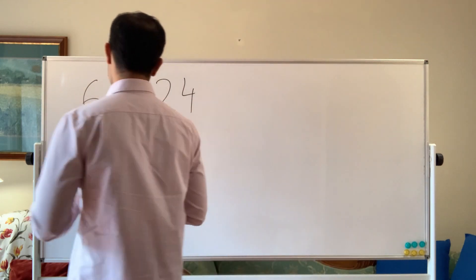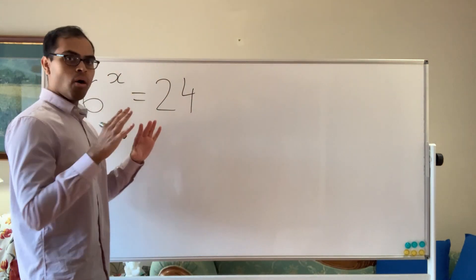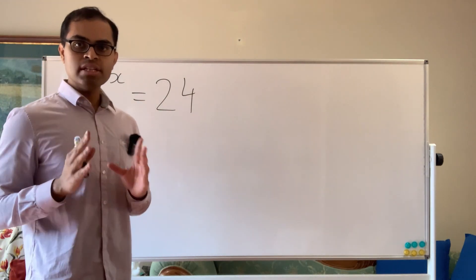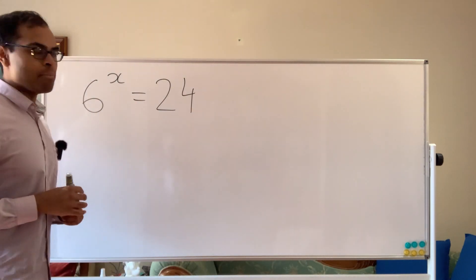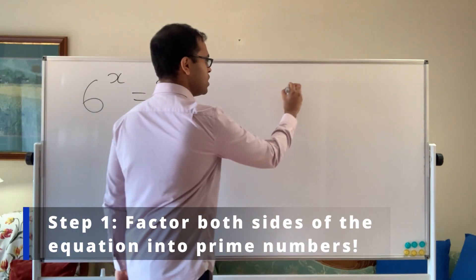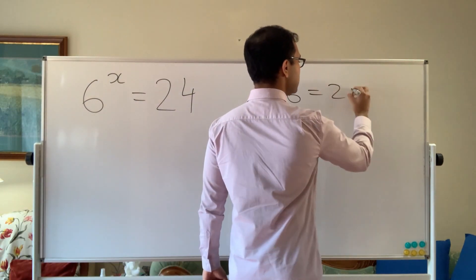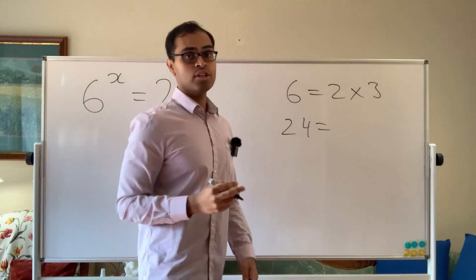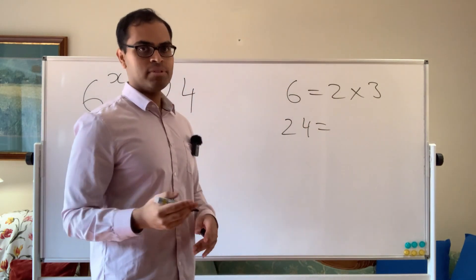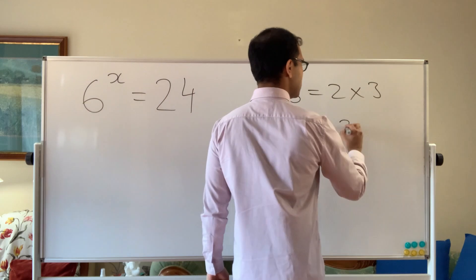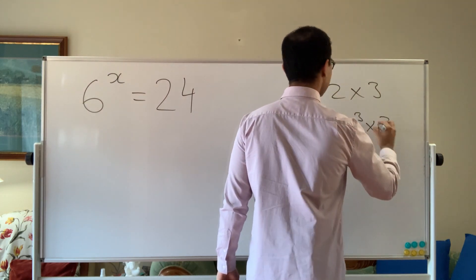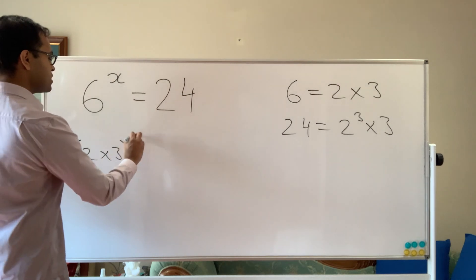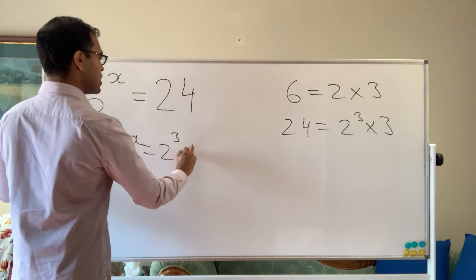The simple process for doing this — what I like to do is to make all the bases the same on both sides of the equation by factoring 6 and 24 into small numbers. Here, 6 is equal to 2 times 3. And 24 is equal to 3 times 8, and 8 is 2 cubed, so it's going to be 2 cubed times 3. So we can write 6 to the power x as (2 times 3) to the power x, equal to 2 cubed times 3.